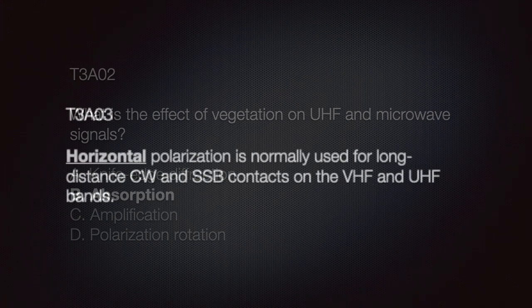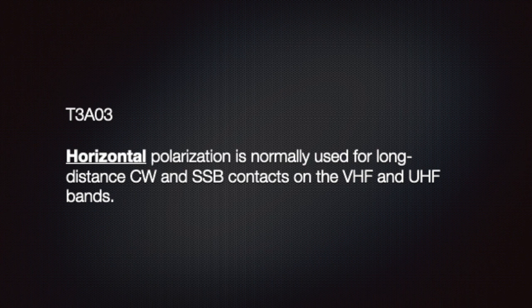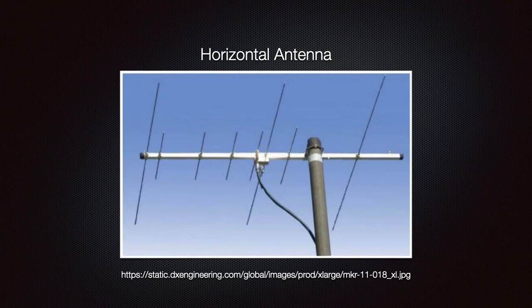We should learn that horizontal polarization is normally used for long-distance CW or Morse code and single sideband contacts on the VHF and UHF bands. This photo shows a horizontally polarized dual-band two-meter and 70-centimeter Yagi antenna. When talking with a repeater, vertical polarization works better because that's typically the orientation the repeater antenna is in. However, horizontal works better for long distances because it performs better with weaker signals.